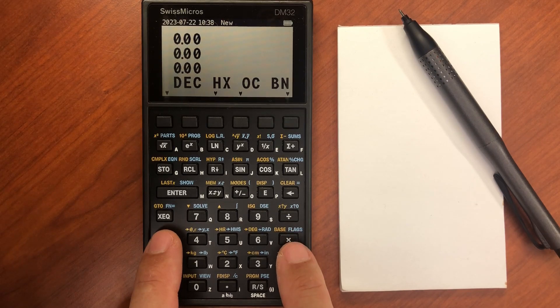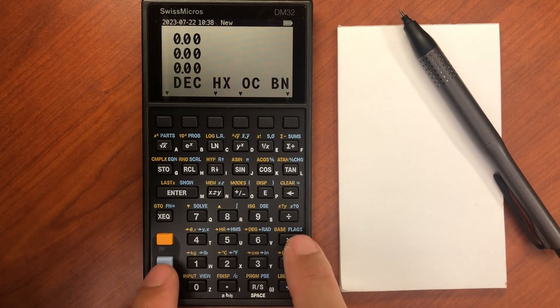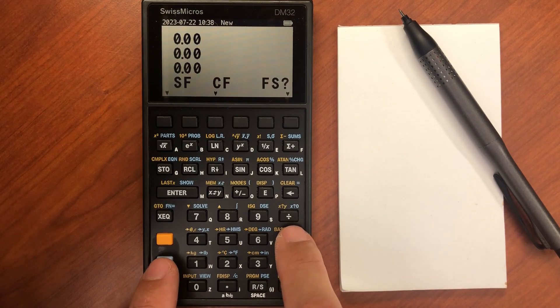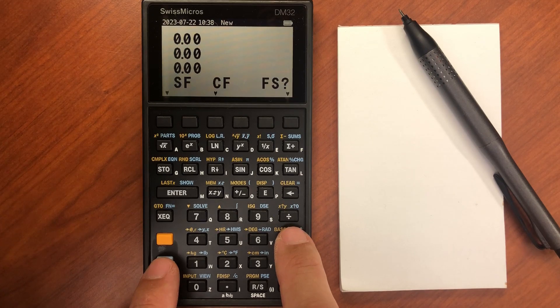Then we have various menus for programming. So we have a flags menu right here, blue shift, flags. We can set a flag, we can clear flag, and we can see if a flag has been set.